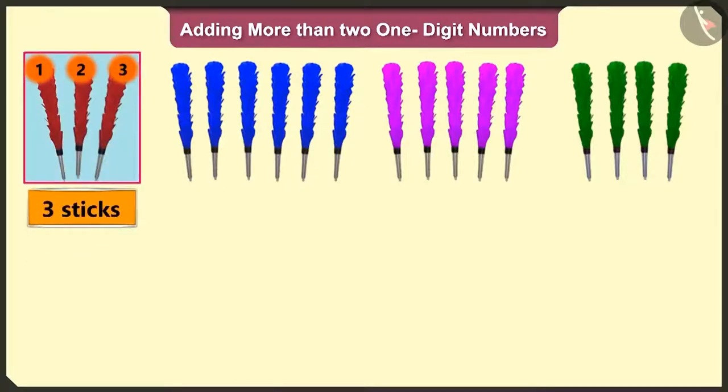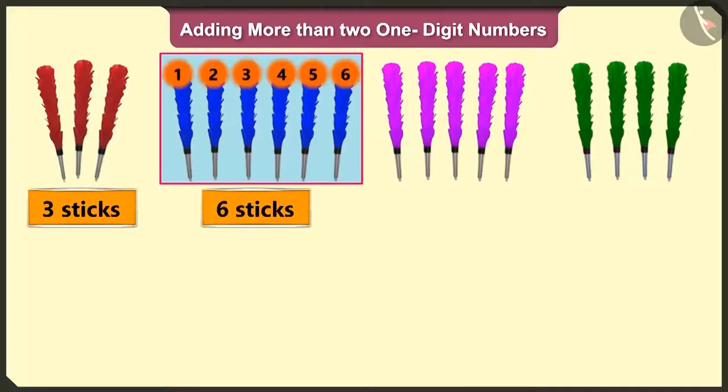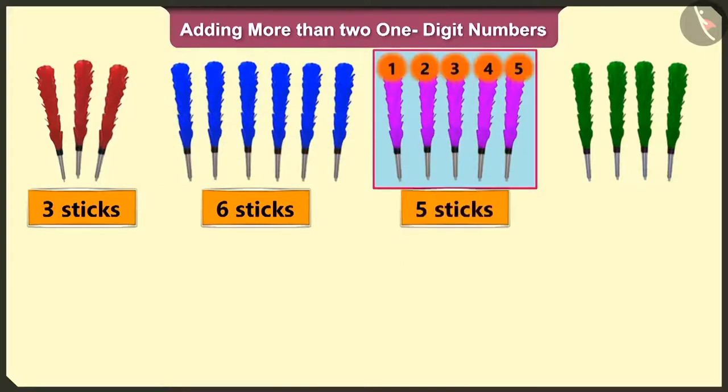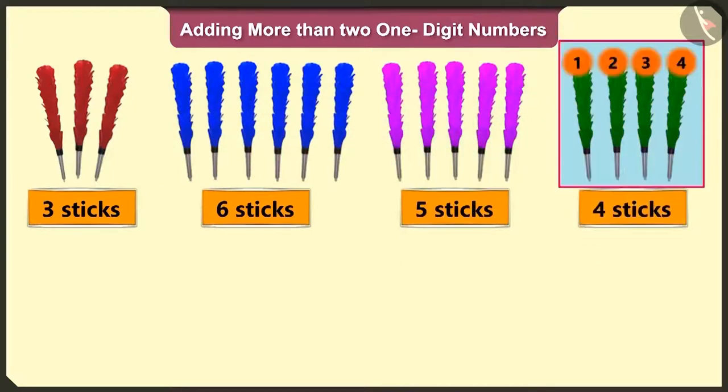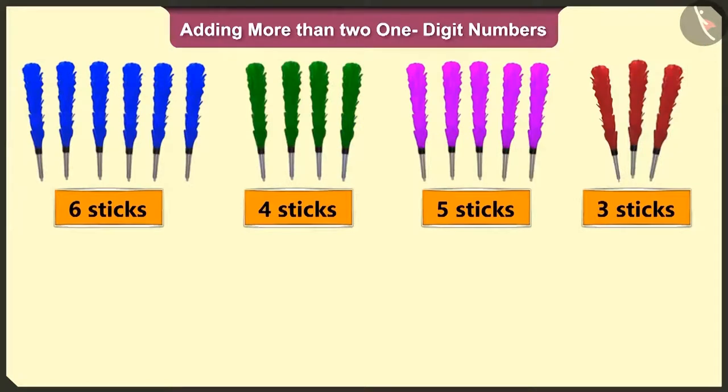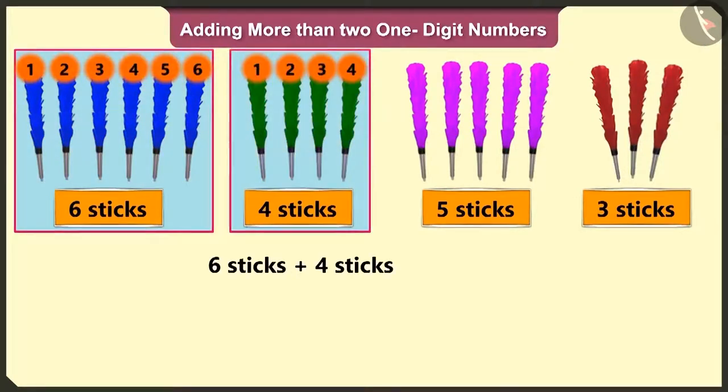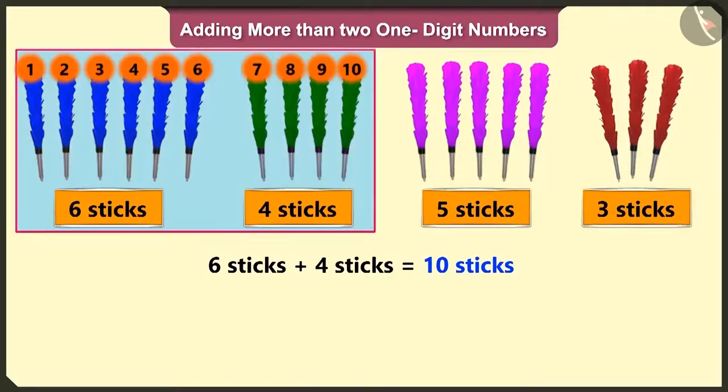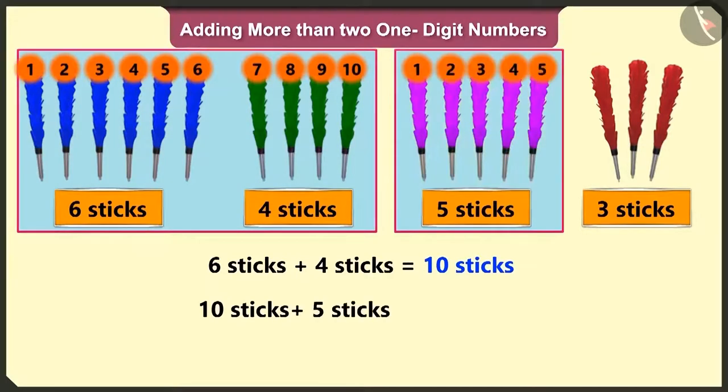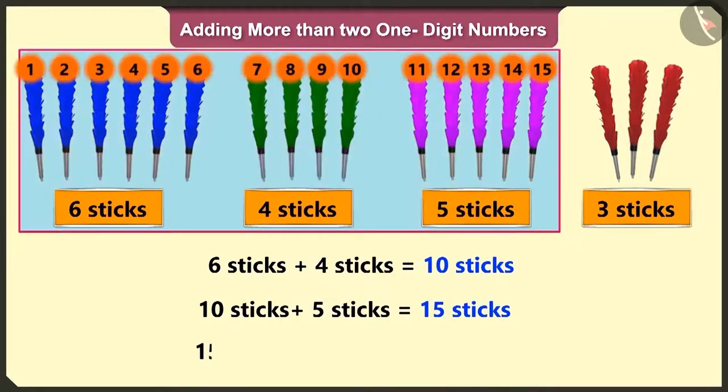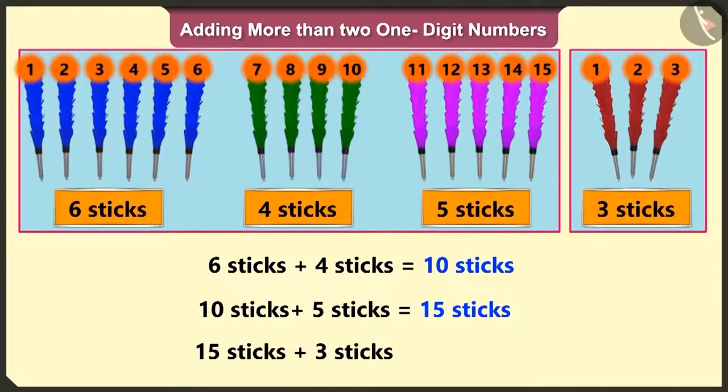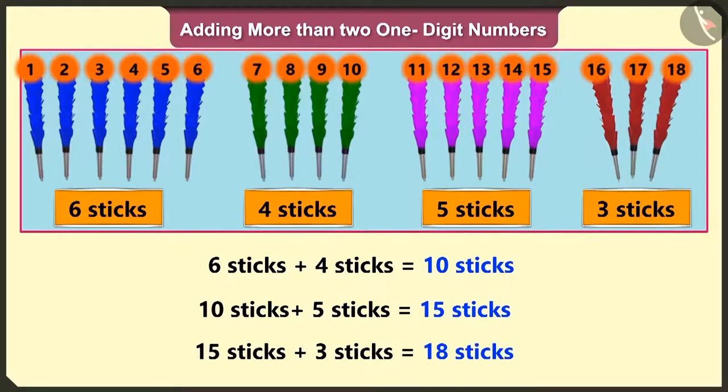The number of sticks is different here. First group has three sticks, six in the second group, five in the third group and the fourth group has four feather sticks. First of all, we will add six sticks to four sticks. We get the number ten. Then we add ten and five sticks. We get number fifteen. To this fifteen, we add three more sticks. We get a total of eighteen sticks.